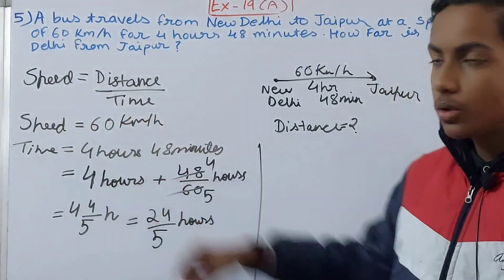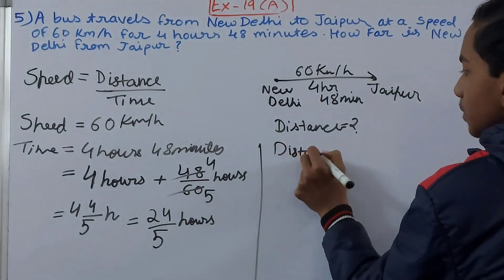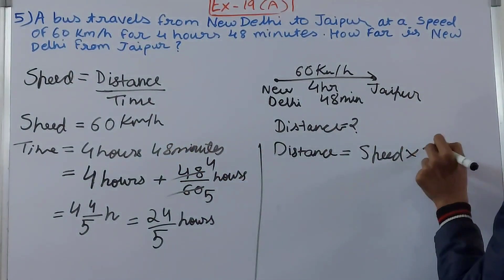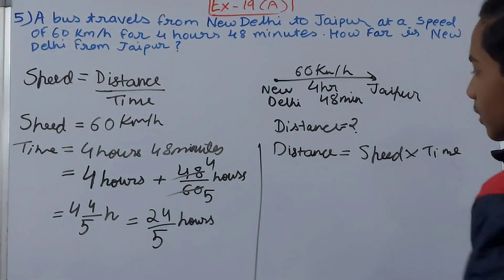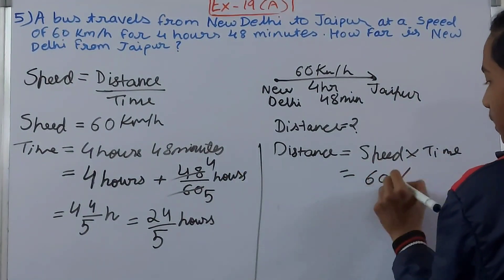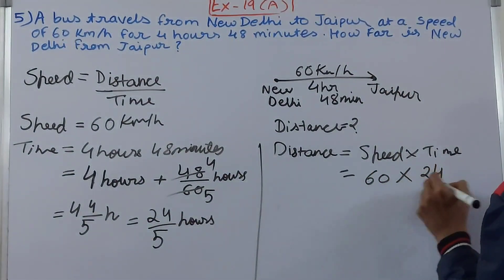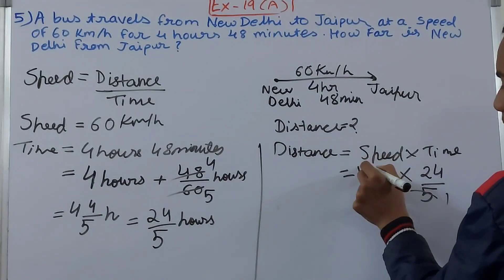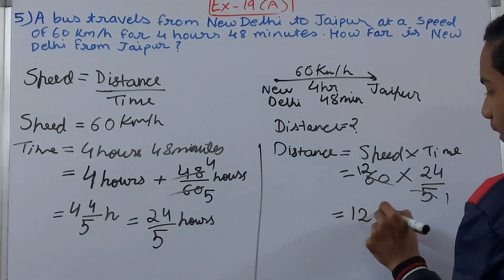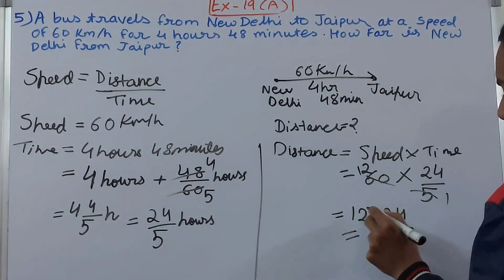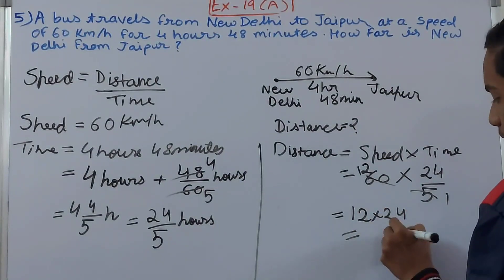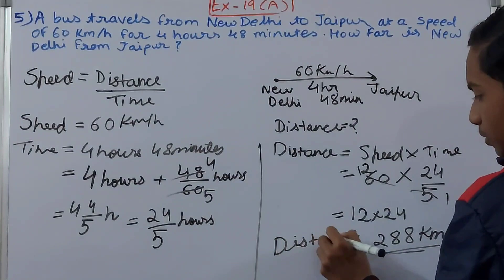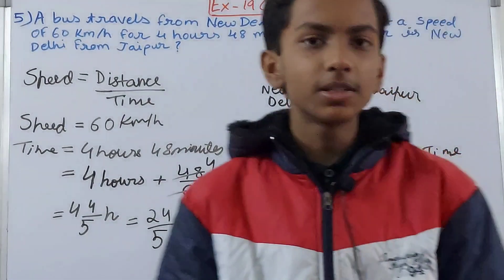From speed equals distance upon time, we rearrange: distance equals speed multiplied by time. Substituting values: distance equals 60 kilometers per hour multiplied by 24/5 hours. Canceling 60 by 5 gives 12, so distance equals 12 times 24. That is 288 kilometers. So the distance from New Delhi to Jaipur is 288 kilometers.